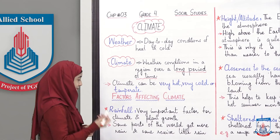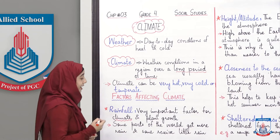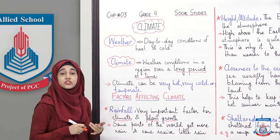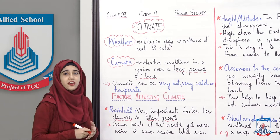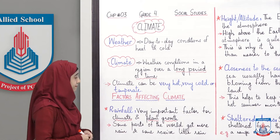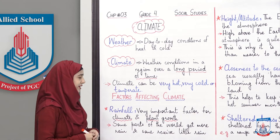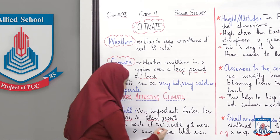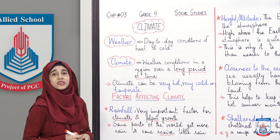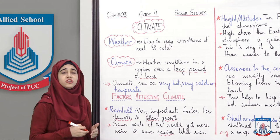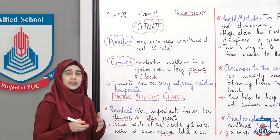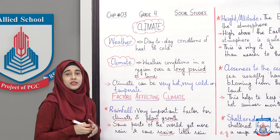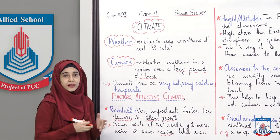بارش بہت important ہوتی ہے for climate and plant growth — پودوں اور فصلوں کے لیے بھی بہت اہم ہوتی ہے. Some parts of the world get more rain and some receive little rain. دنیا کے کچھ حصوں میں بارش بہت زیادہ ہوتی ہے اور کچھ میں بہت کم. یہ region to region differ کرتا ہے — دنیا کے different regions میں بارش بھی vary کرتی ہے.